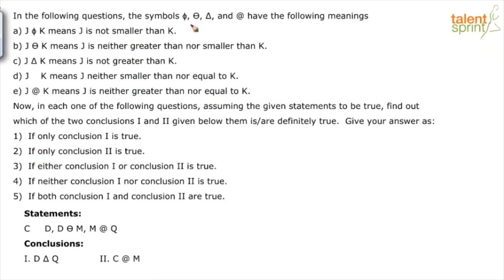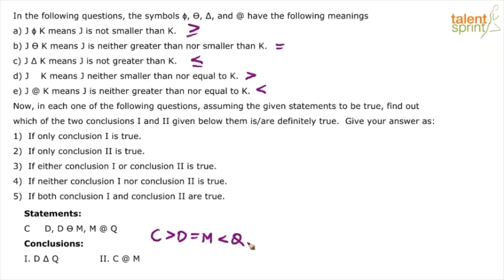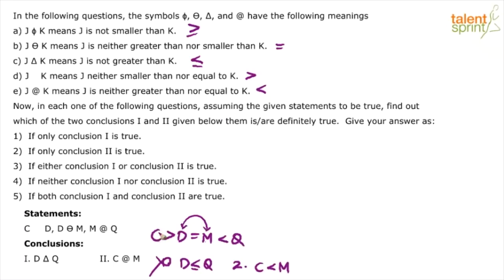Let's go to the next one. You know the meanings: greater than or equal, equal, less than or equal, greater and less. First statement: c space d means c is greater than d. d theta m means d is equal to m, and m at-the-rate q means less than q. First conclusion: d delta q means d less than or equal to q. We know d is equal to m and m is less than q, so d also is less than q. But the conclusion says less than or equal — so the first conclusion is wrong. Second conclusion: c at-the-rate m means c less than m. But c is greater than d and d equals m, so c is greater than m. The conclusion says c less than m — so even the second conclusion is wrong. Your answer should be neither conclusion 1 nor conclusion 2 is true.